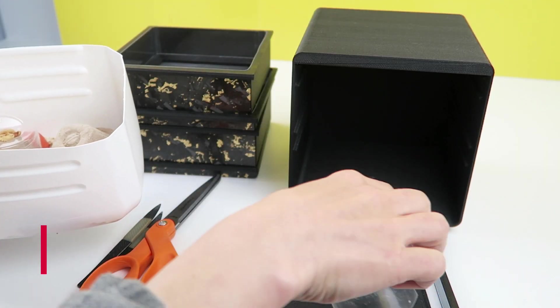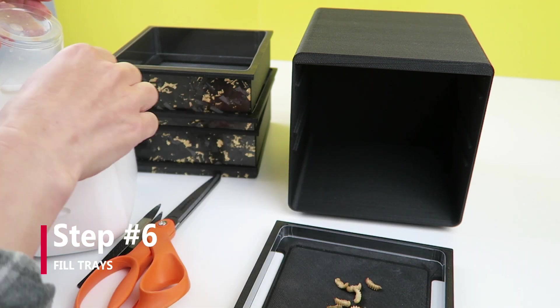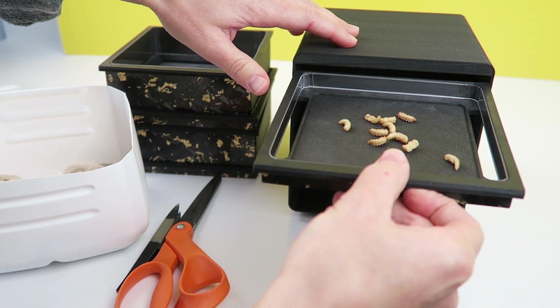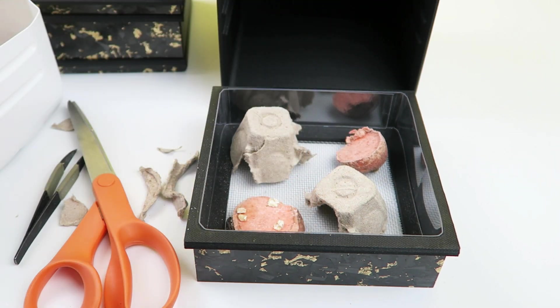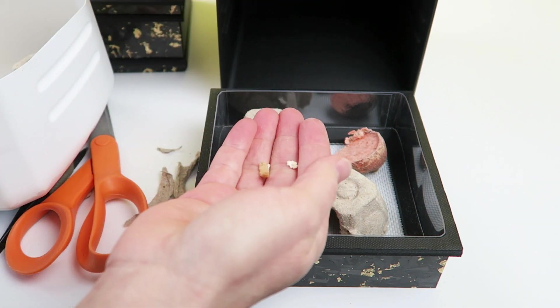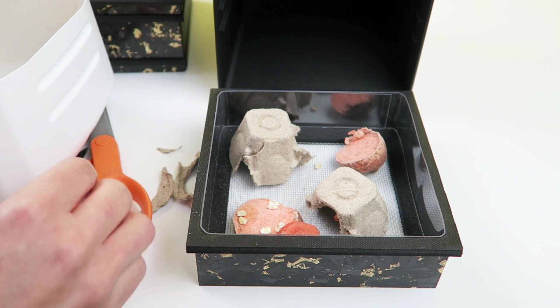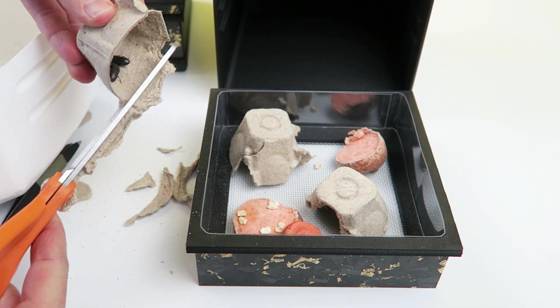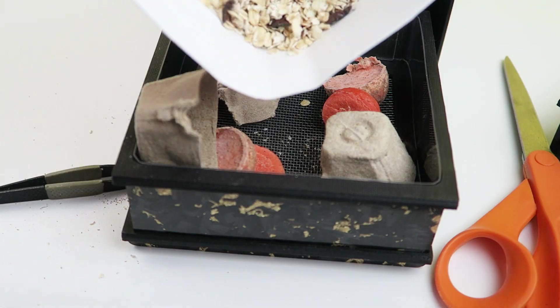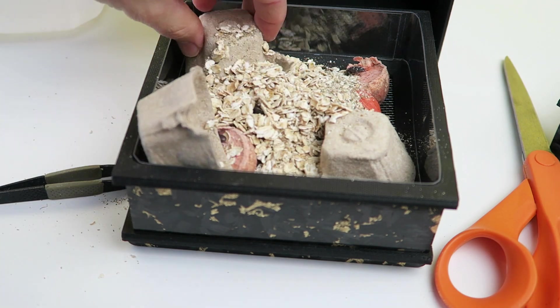To set up the mealworm farm, add pupas to the top tray, beetles below in a mesh-lined tray, next a small catch tray, then another mesh-lined tray for large mealworms, and the bottom catch tray below. The newly hatched beetles will climb down into the beetle tray. Eggs and waste will fall through the mesh into the small trays below.